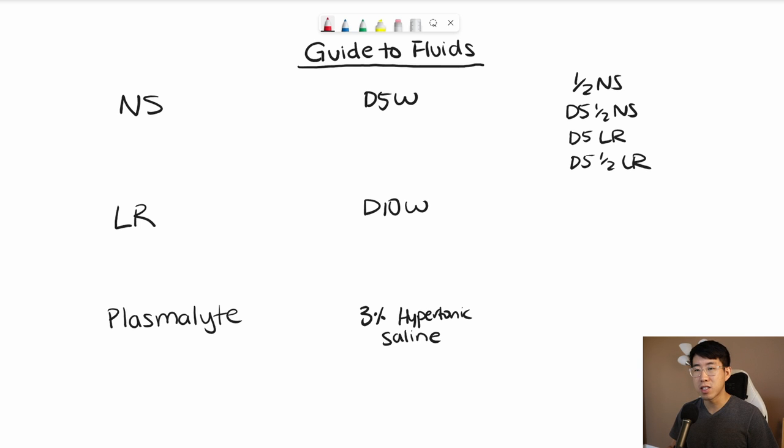The main way to categorize these from here is that these three on the left - normal saline, lactated ringers, and plasmalite - are all going to be kind of your fluid resuscitation fluids. Whereas D5 water and D10 water are going to be things you use for hypoglycemia or hypernatremia. 3% hypertonic saline is going to be for hyponatremia. And then these ones over here are going to be kind of your maintenance fluids.